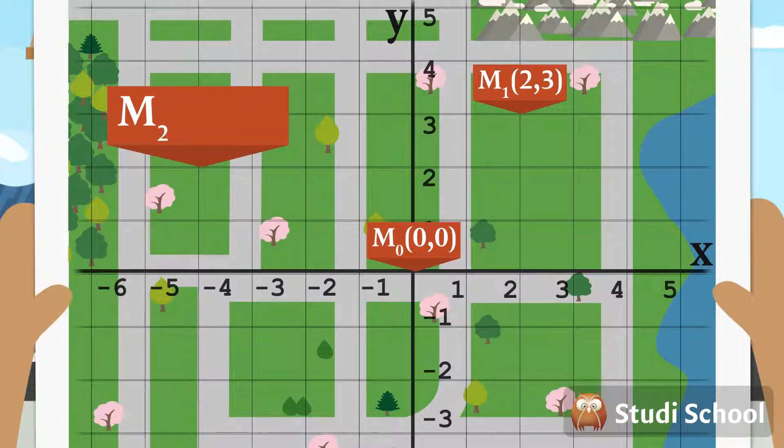Granny's house is located at point M2. Its coordinates are -4 on the X-axis and 2 on the Y-axis. As always, the X-coordinate comes first and then the Y-coordinate.